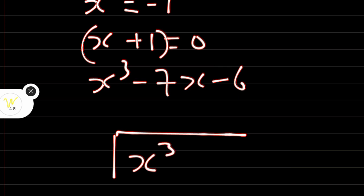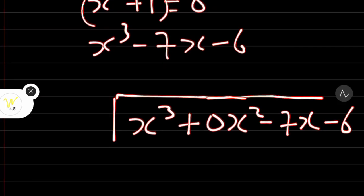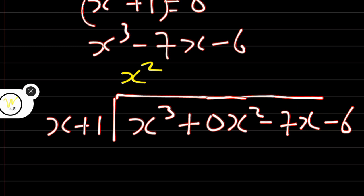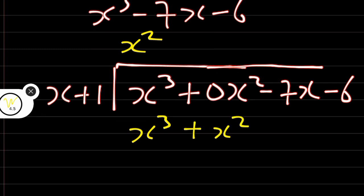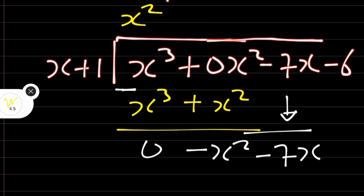We are going to write the dividend as x cubed plus 0x squared minus 7x minus 6, because the x squared term is not there, meaning it has a coefficient of 0. We have x plus 1 as the divisor. x cubed divided by x gives x squared. Use x squared to multiply x plus 1, giving x cubed plus x squared. Subtracting, we get 0 minus x squared which is minus x squared. Bring down minus 7x. Then divide minus x squared by x to get minus x.